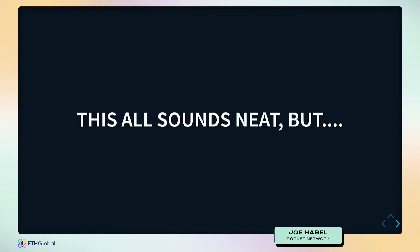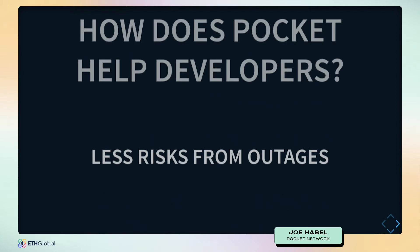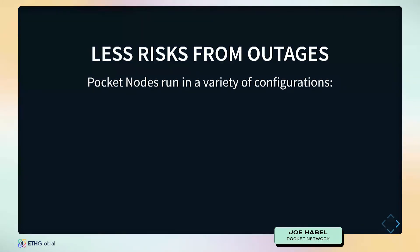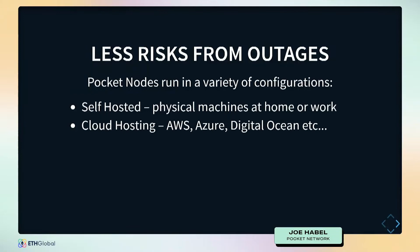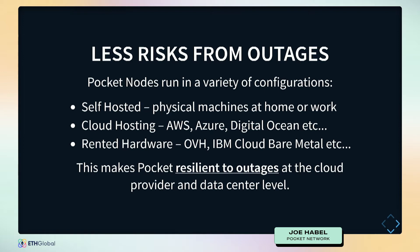How does Pocket actually help you as a developer? A big thing is you have less risk from outages. Pocket nodes run in a variety of configurations — some people self-host physical machines they own, some cloud-host on AWS, Digital Ocean, and other standard providers, and some rent direct hardware through OVH or IBM Cloud bare metal. Basically, if any of these big services goes down, there's an entire other swath of nodes out there ready to pick up the service.